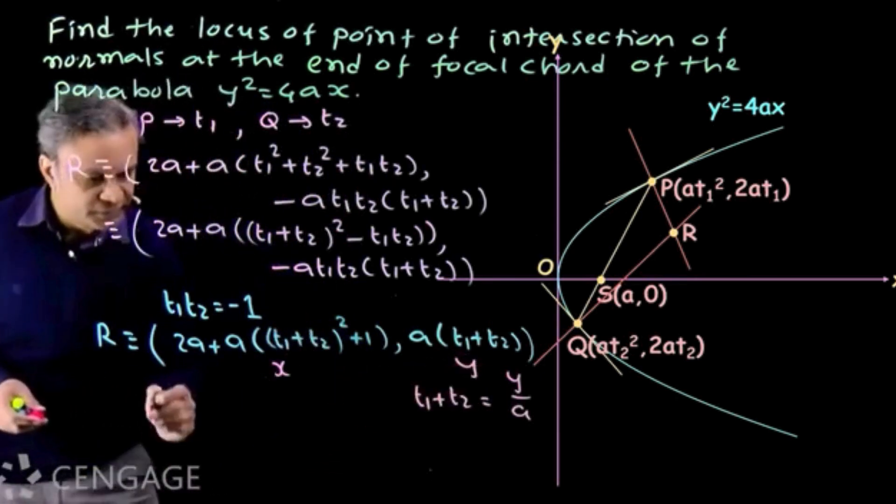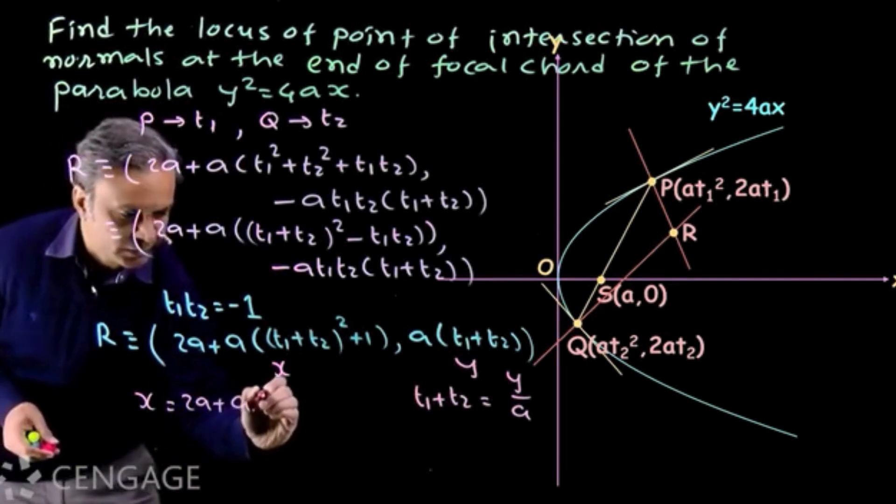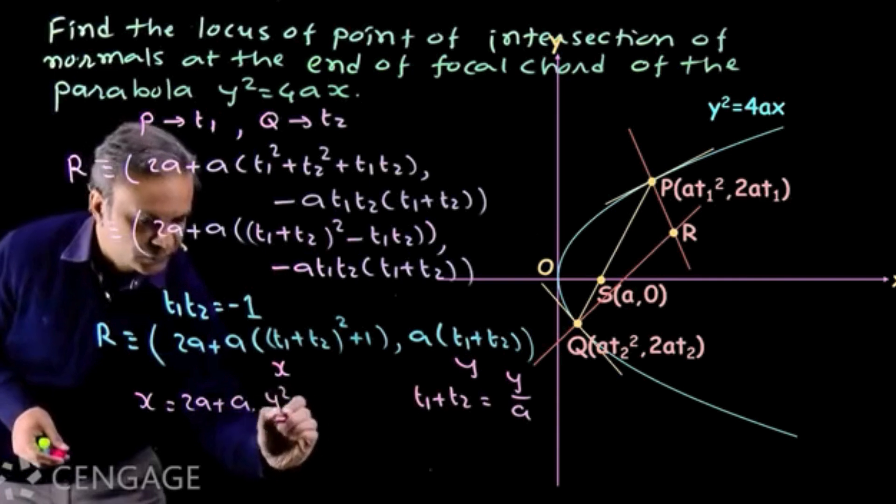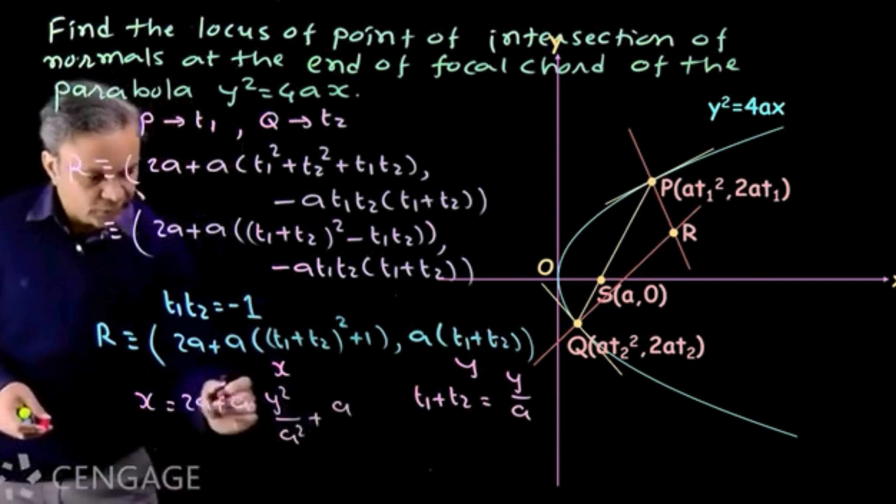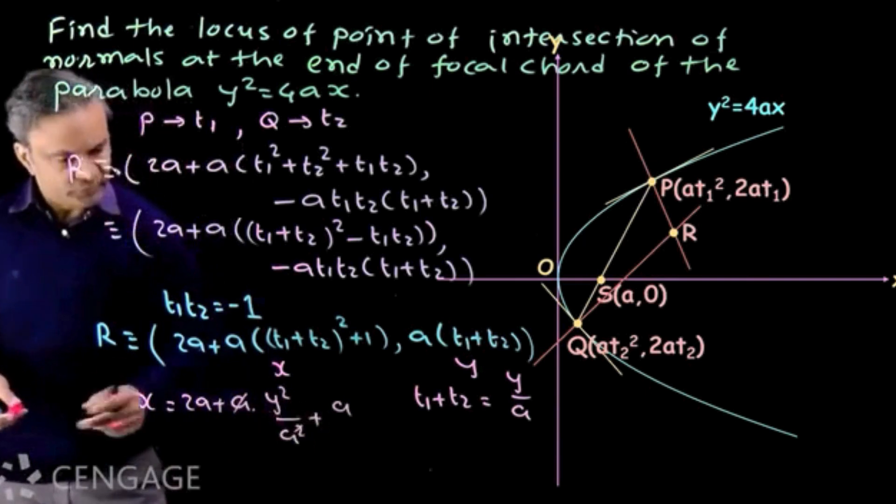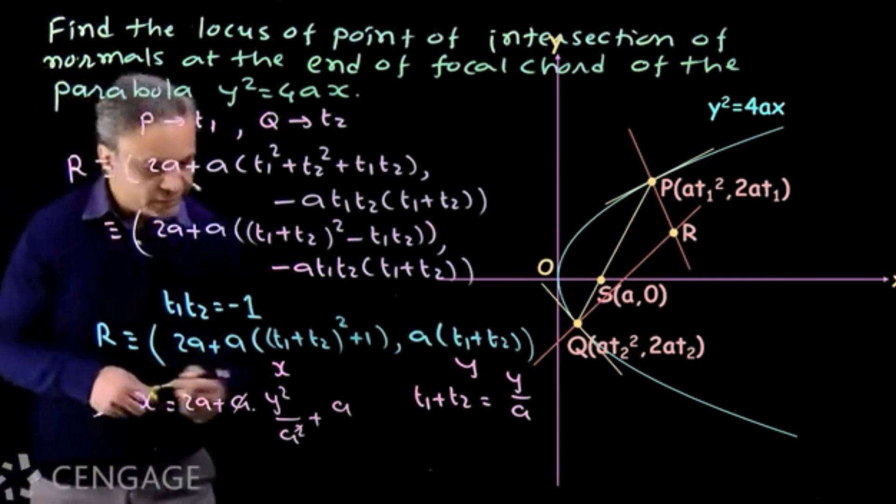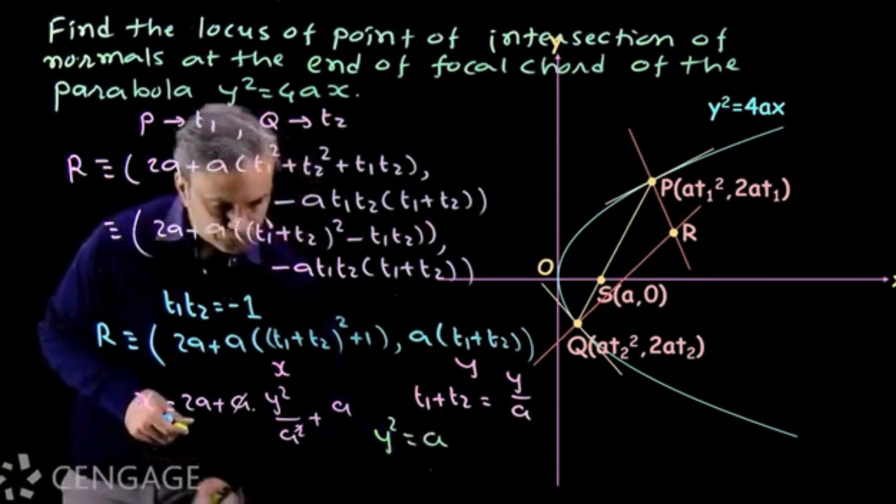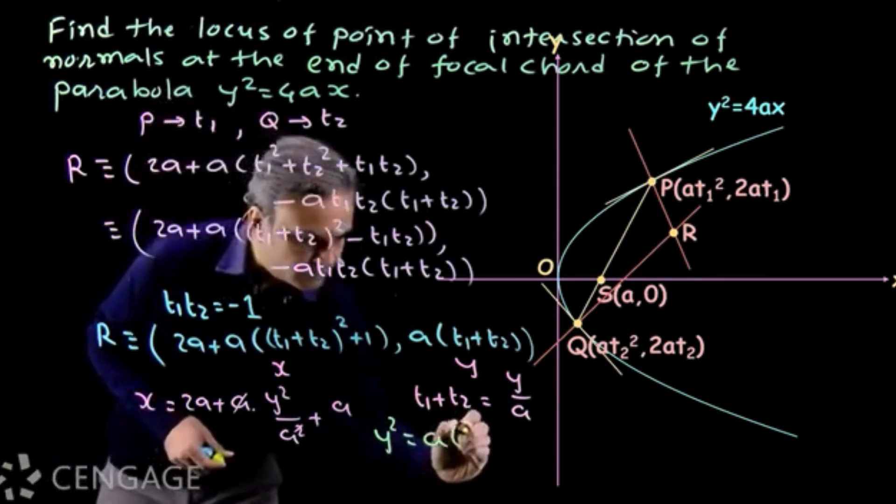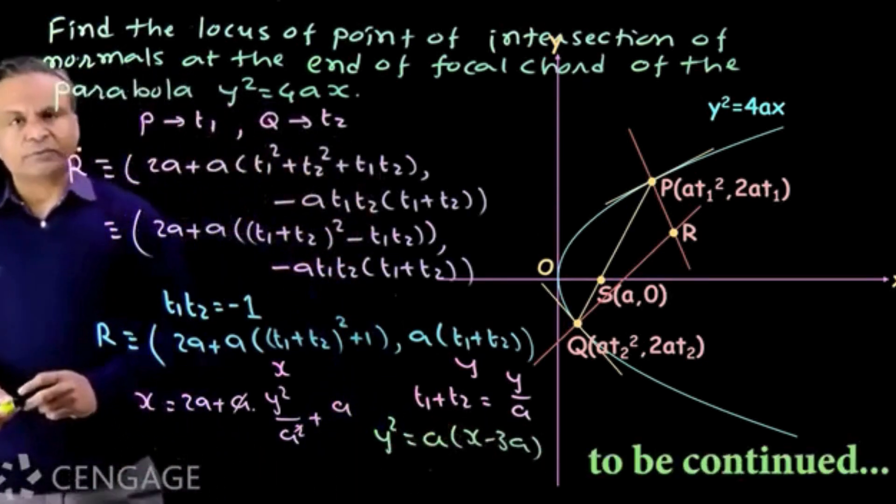And then we put the value of t1 plus t2 in this comparison. We get x is equal to 2a plus a multiply by y squared upon a squared plus a. Here a gets cancelled out. We multiply both sides by a, so we get equation of locus as y squared is equal to a multiply by x minus 3a. This is also equation of parabola.